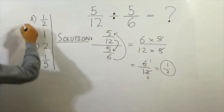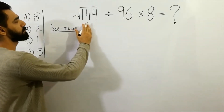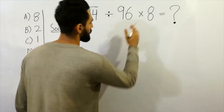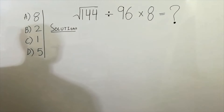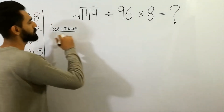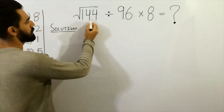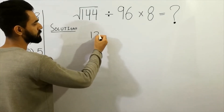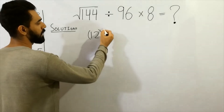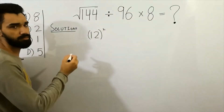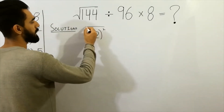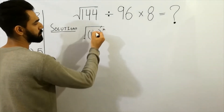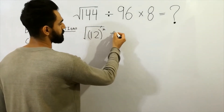Next question: root of one-forty-four divided by ninety-six, multiplied by eight — which option is correct? First, root of one-forty-four: you know that twelve squared equals one-forty-four, so the root gives twelve. The square and root cancel each other — that is the first step.